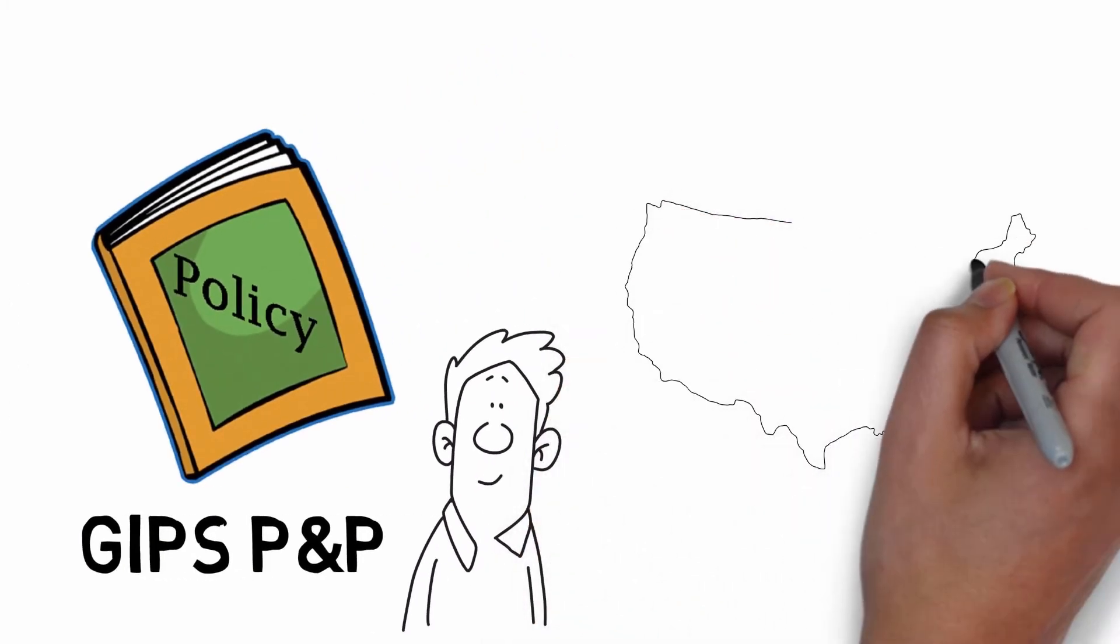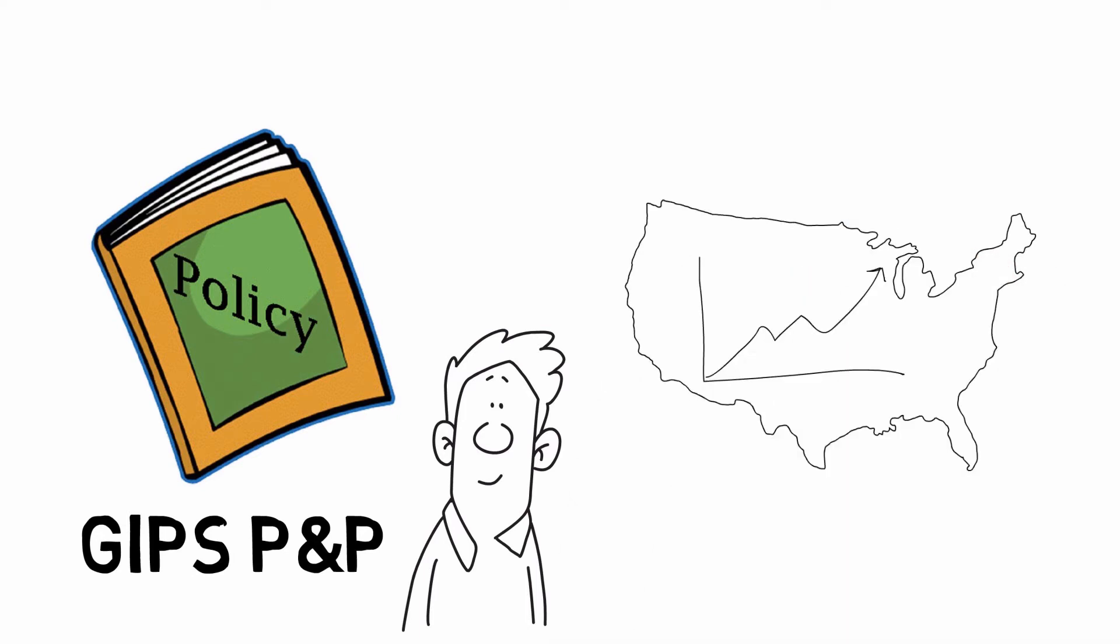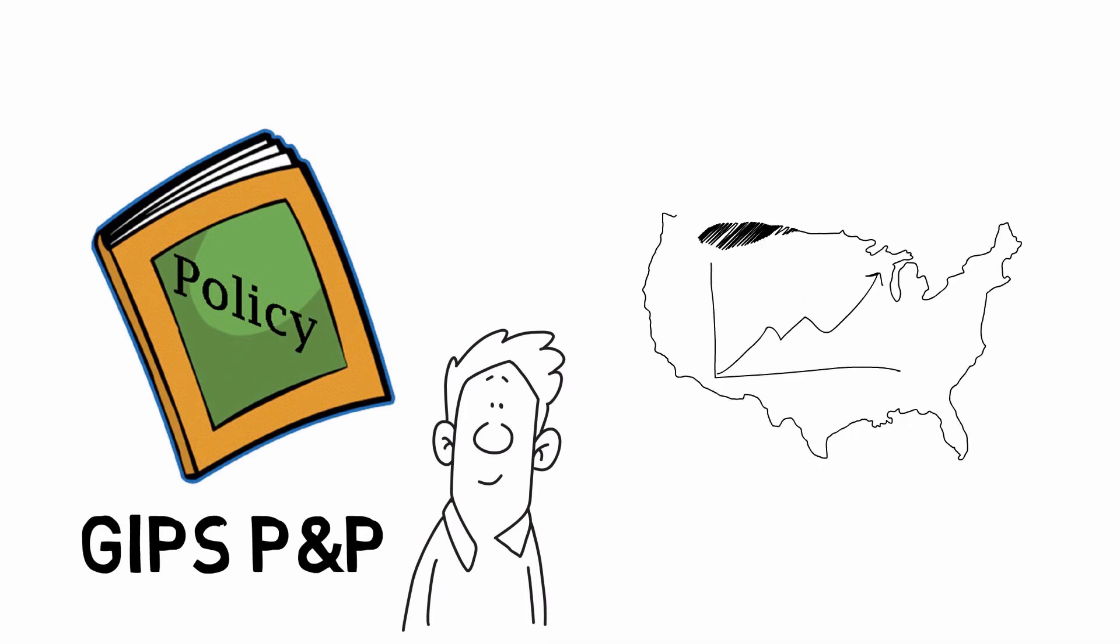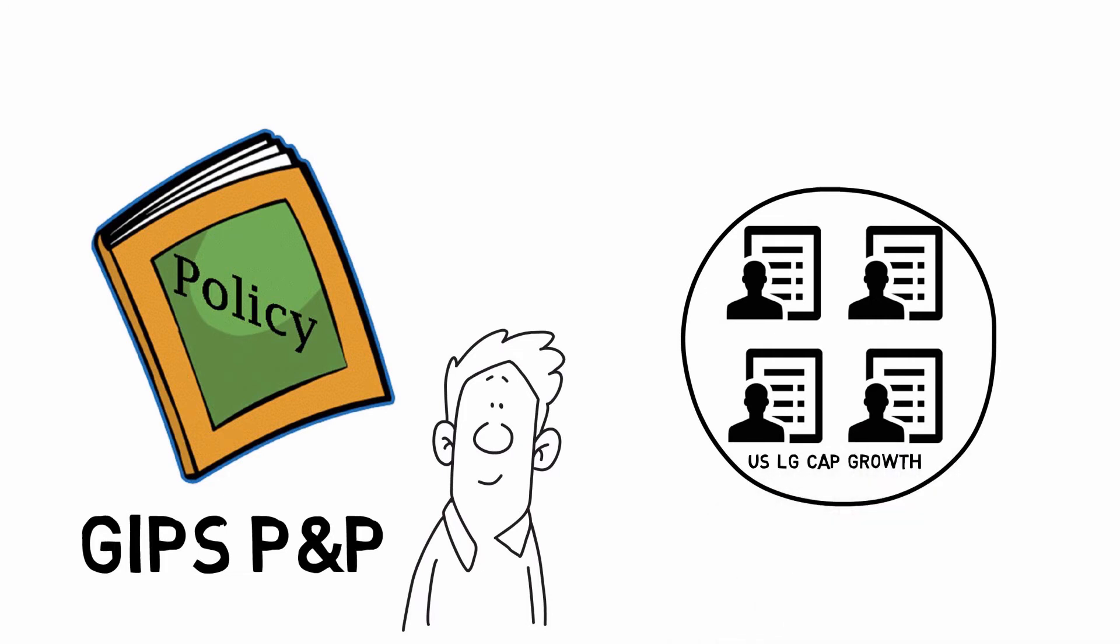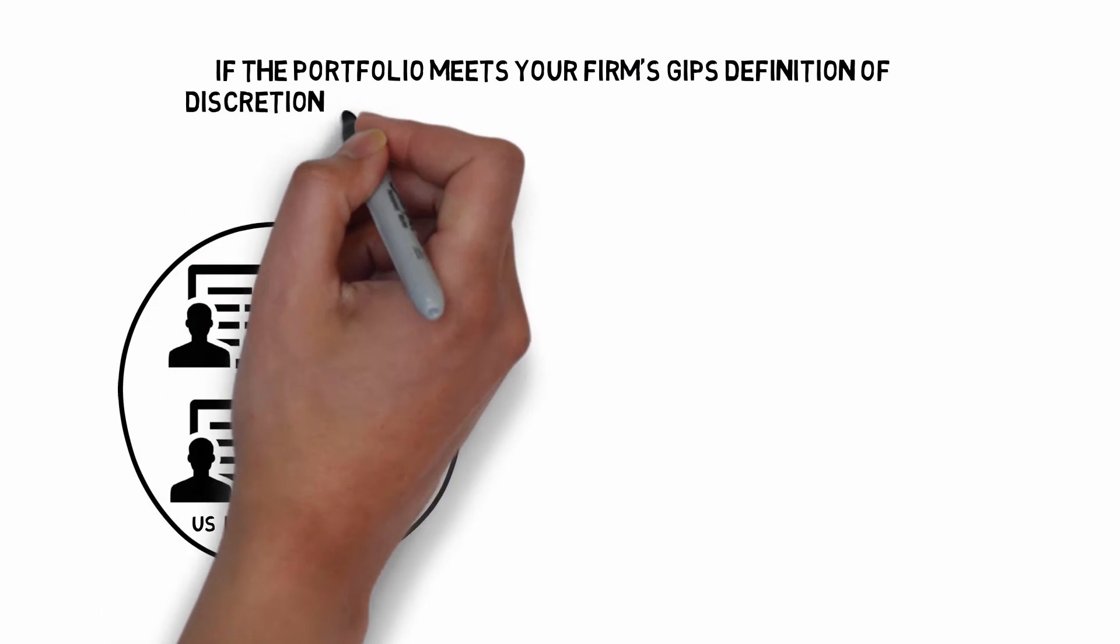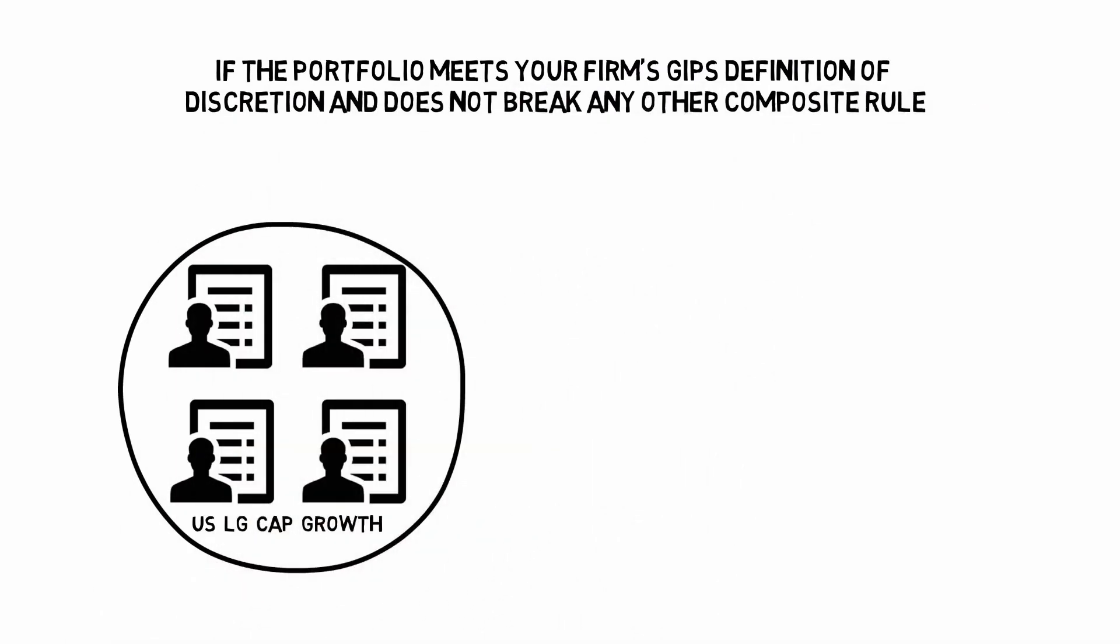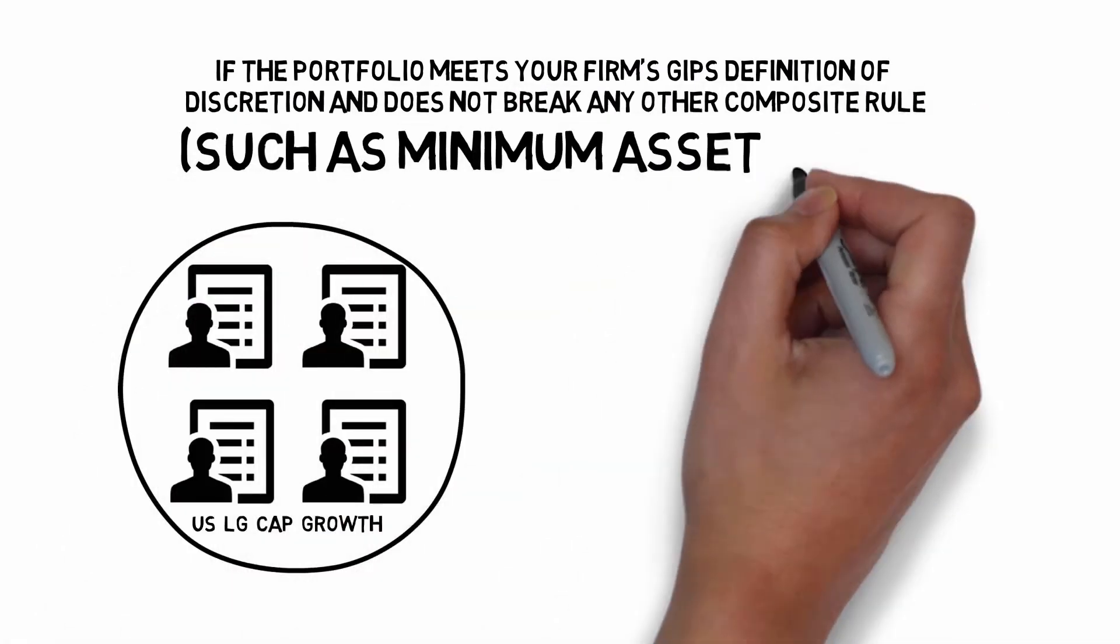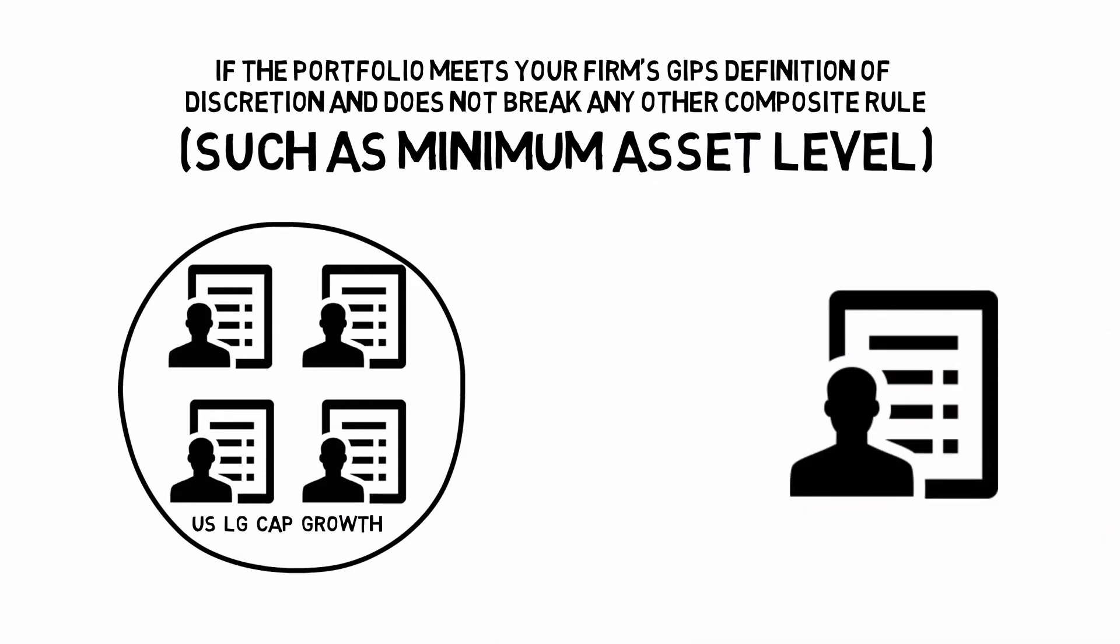For example, if you have a U.S. large-cap growth strategy, you can start by evaluating all of the portfolios that follow this strategy's definition. If the portfolio meets your firm's GIPS definition of discretion and does not break any other composite rule, such as minimum asset level, the portfolio can be added to your U.S. large-cap growth composite.